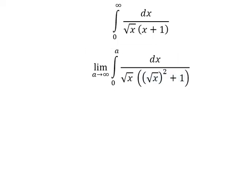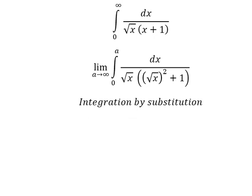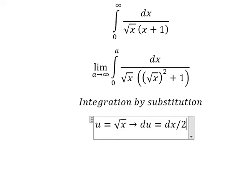Next we can use integration by substitution. I will put u equals the square root of x. Later we take the derivative of both sides, and we have dx over 2 times the square root of x.